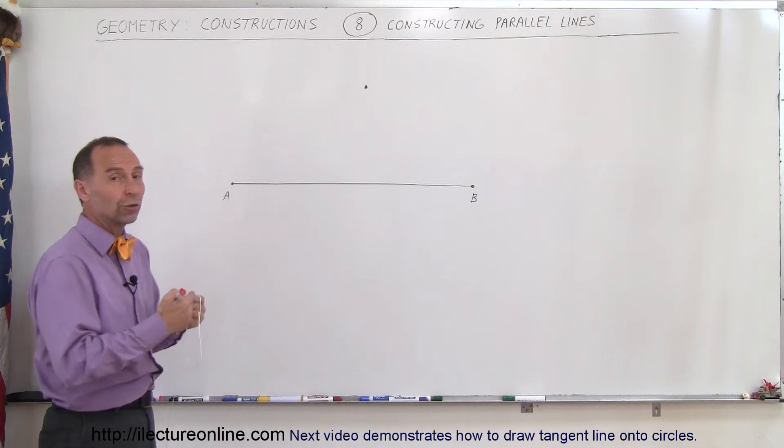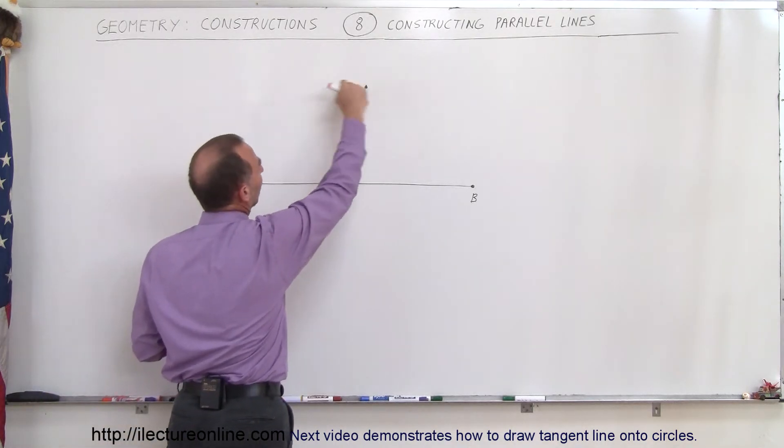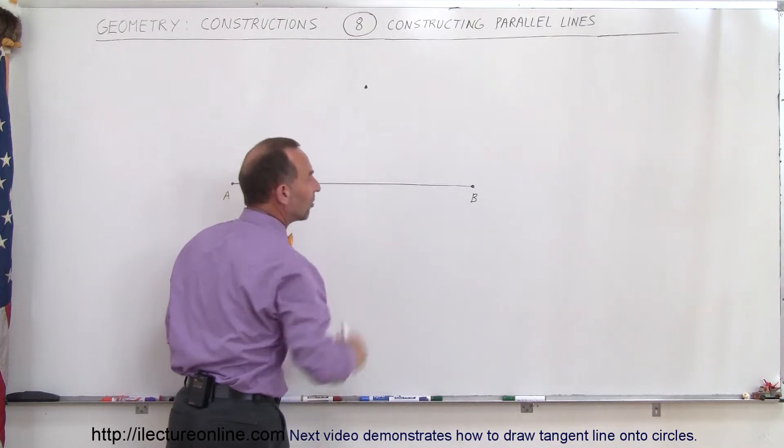First of all you need to draw through some points, so there must be some given point right here. So you want to have a line right here that is exactly parallel to this line.